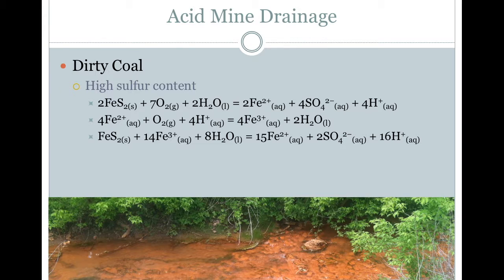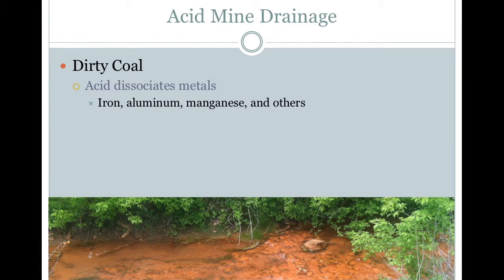Iron(II) interacts with additional oxygen and hydrogen ions to create iron(III) and water. These two reactions occur simultaneously, producing a solution that is high in iron and sulfate, as well as being extremely acidic. The highly acidic environment dissociates other metals from the rocks in the mine, such as aluminum, manganese, cadmium, and many others.